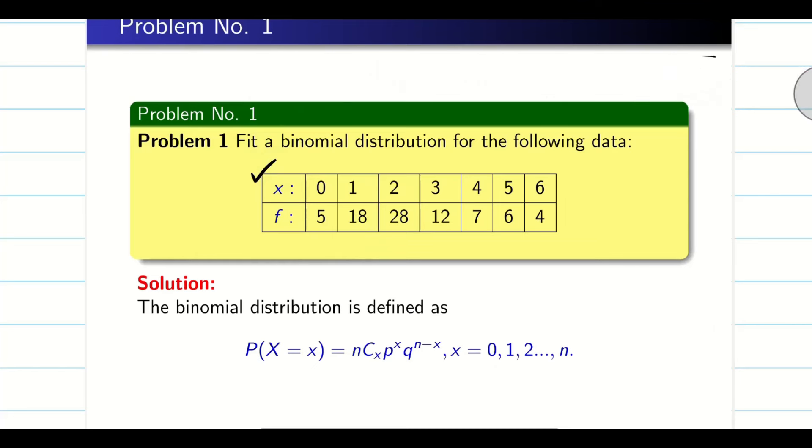Now, this is done. Now you know how to find N. Now the problem is I want to find P because if I want to apply binomial distribution, I want N and P. But the data given is what? Frequencies. The frequencies are given to us. How to find P from the frequency?